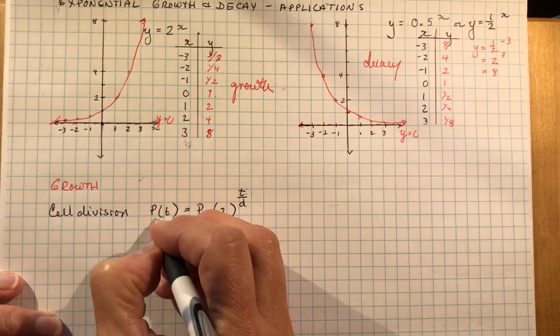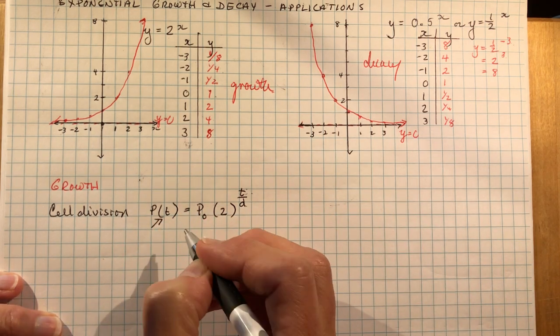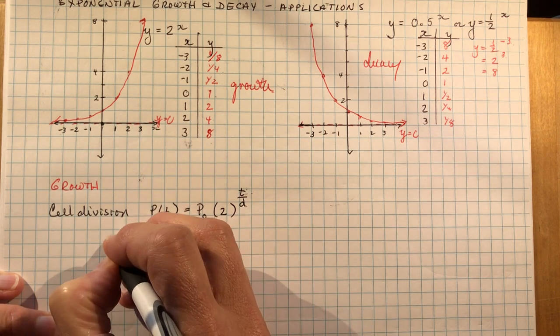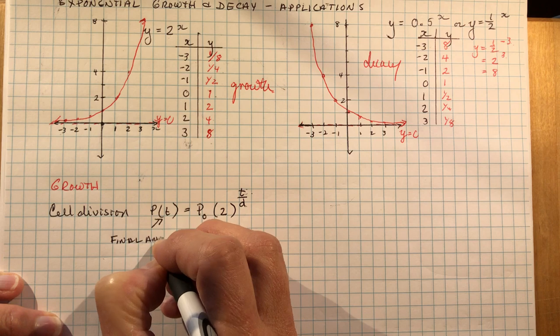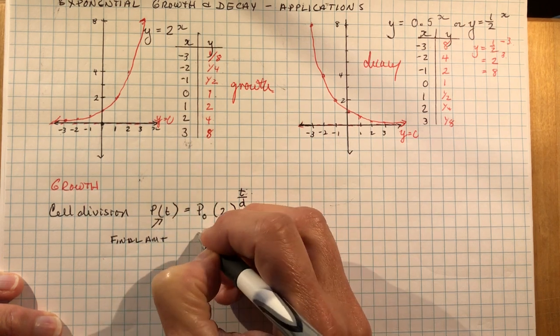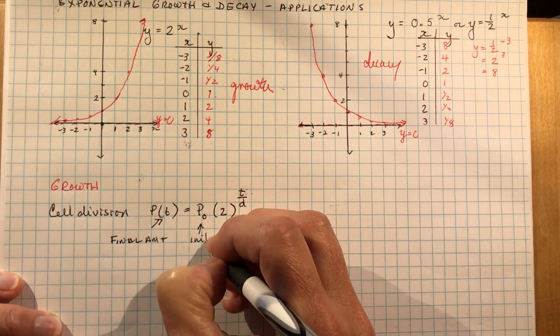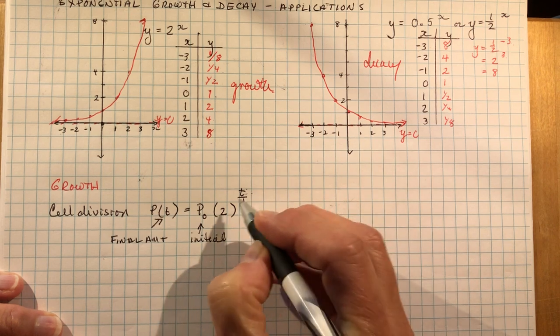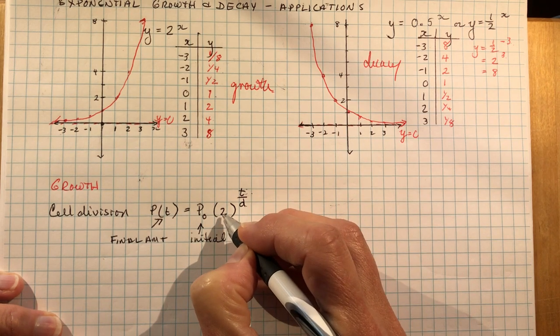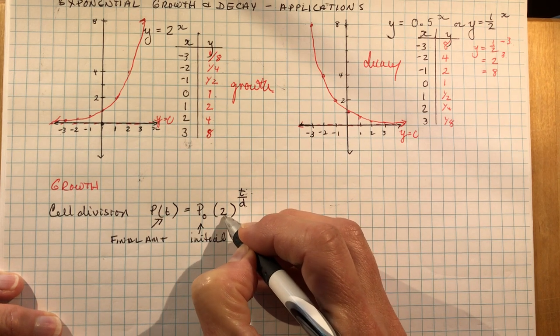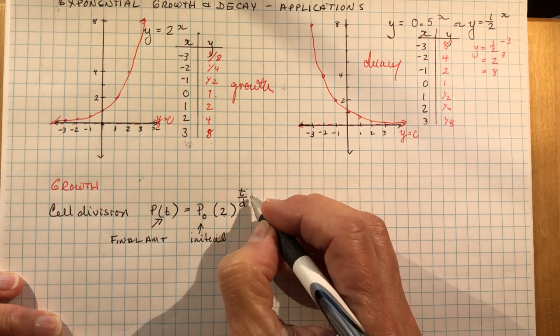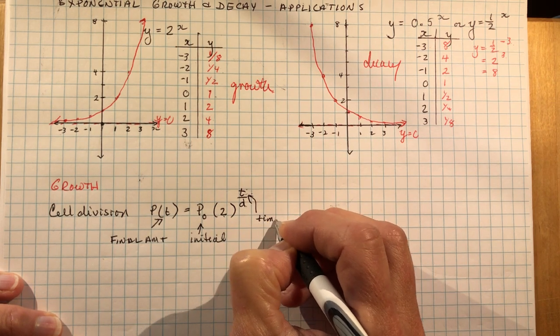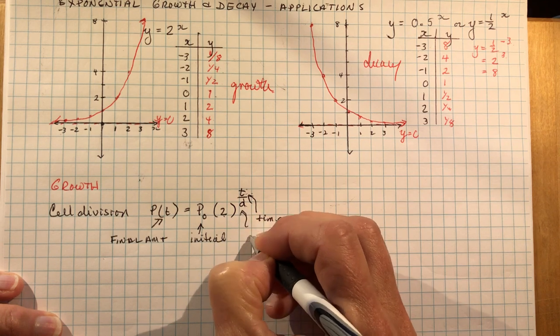So that's what we have here. This is your final answer, how many you get at the end. So this is the final amount of cells at some time t. This is your initial number, what you started with. This is a doubling. It's saying that these cells are doubling and the exponent tells you how many times it doubled - how much time has gone by and what is the doubling period.